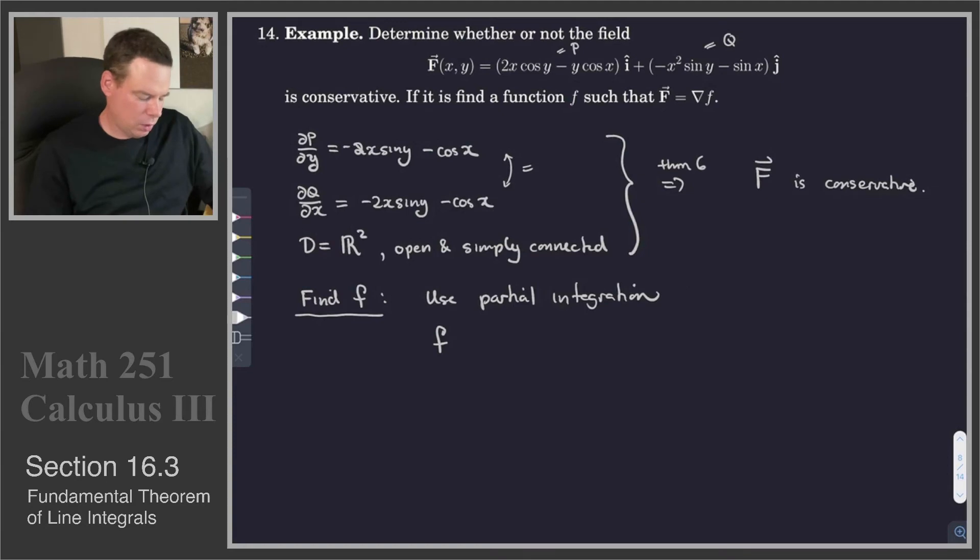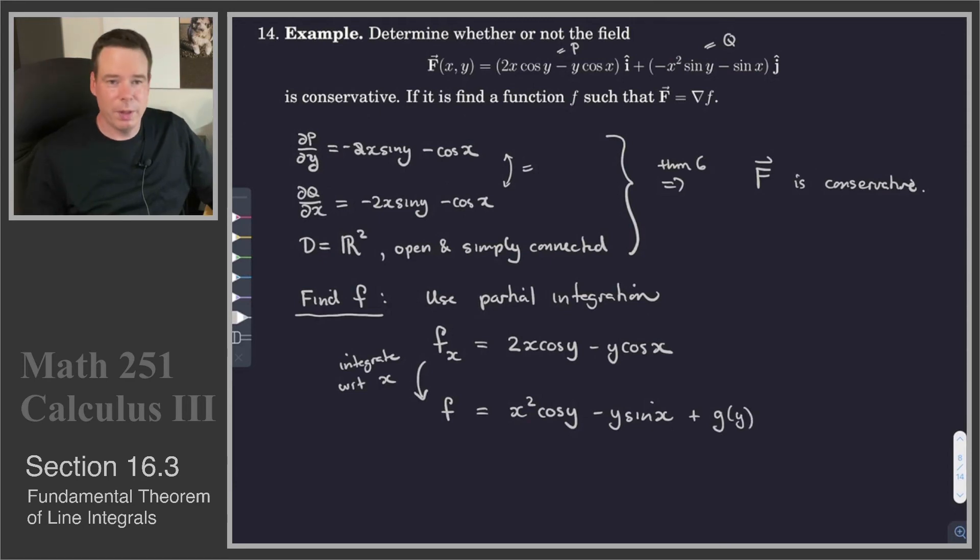We know that this function, little f, we're looking for, when we take its x partial derivative, we're going to get the function P. So that would be 2x cos y minus y cos x. And so what we'll do is we will integrate or find the antiderivative of this thing with respect to x. So when I do that, the antiderivative would be x squared cos y minus y sin x plus constant of integration. But here, the constant of integration could be any function of y, so we'll call it g of y. So our g of y is just some constant relative to the x variable, and so that means it can be a function of y.